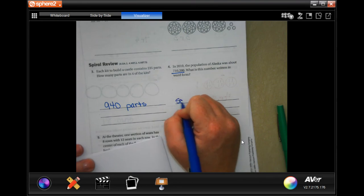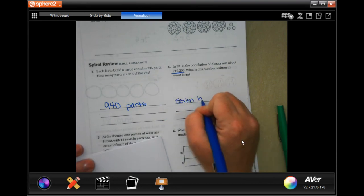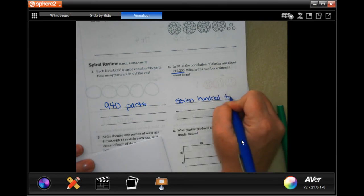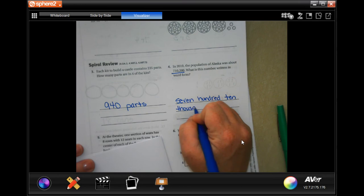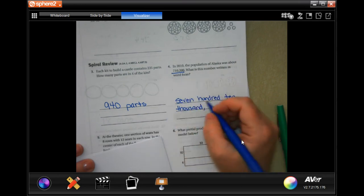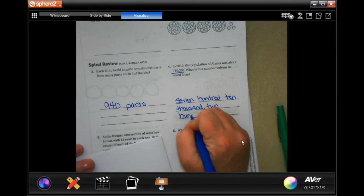Seven hundred ten thousand, comma, that's where the comma is, two hundred. Done.